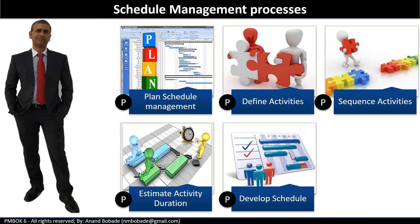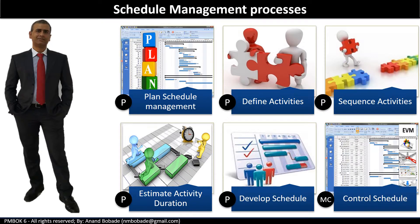And finally, control schedule, which is under the monitoring and controlling process group. So the first five processes are part of the planning process group, and the last process is under monitoring and controlling. Control schedule is the process of monitoring the status of project activities to update the project progress and manage changes to the schedule baseline to achieve the intended plan.